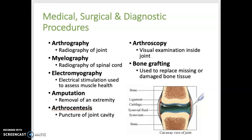An amputation is partial or complete removal of an extremity due to trauma or circulatory disease — if blood isn't reaching a limb, the tissue can die. Arthrocentesis, shown here, is the puncture of a joint space using a needle to remove fluid. Arthroscopy is visual examination of the interior of a joint. Bone grafting is implantation or transplantation of bone tissue from another part of the body or from another person to replace damaged bone tissue.